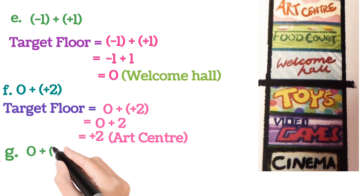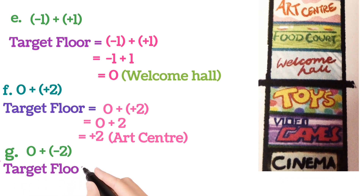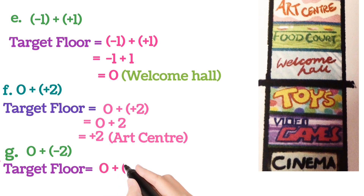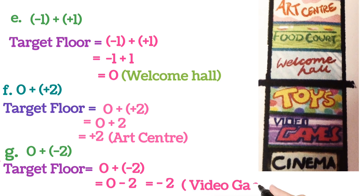Sum number G: 0 plus (minus 2). We write target floor equals 0, and remove the bracket: 0 plus (minus 2), which gives 0 minus 2. So we get minus 2 — we reached one floor below the basement, and there is video games.